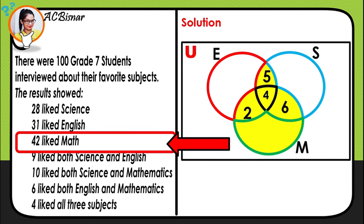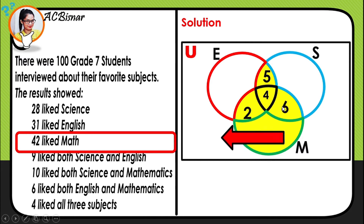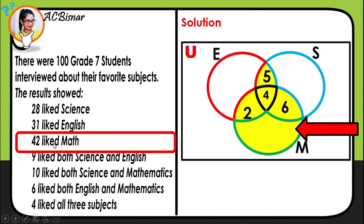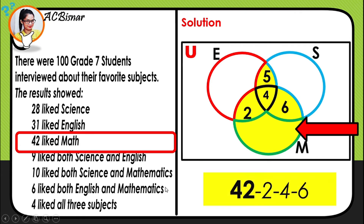42 students like math. In the math circle, we already have 2, 4, and 6 placed. We subtract all of these from 42: 42 minus 2 is 40, minus 4 is 36, minus 6 is 30. So 30 students like math only.